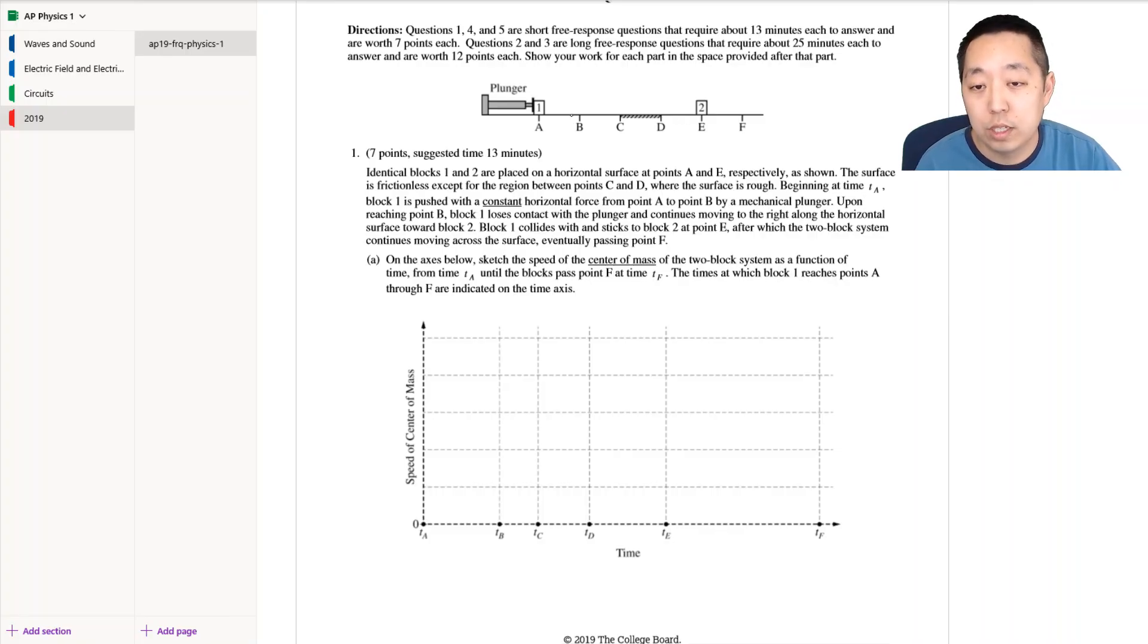Okay so we're pushing this along, it's accelerating. On the axis below, sketch the speed of the center of mass of the two block system as a function of time from TA until the block passes point F at times TF. The times at which block one reaches points A through F are indicated. If I consider this whole system together as two masses, the net force on this system is just the force from the plunger. I'll call it FP.